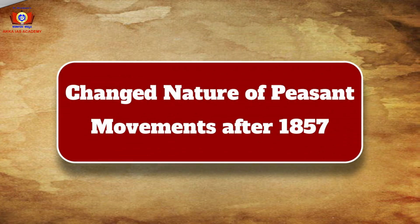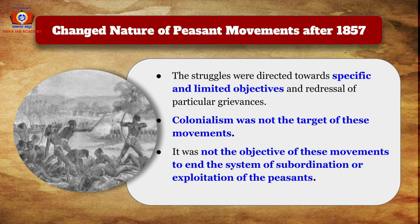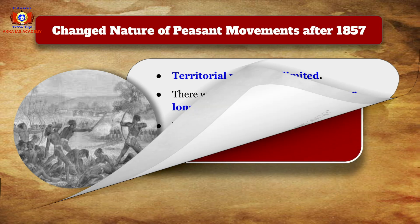The nature of revolts changed after 1857. Peasants emerged as the main force of agrarian movements, fighting directly for their own demands, centered almost wholly on economic issues. These movements were directed against immediate enemies — foreign planters, indigenous zamindars, and moneylenders — with specific and limited objectives. Colonialism was not the target; ending the system of exploitation was not the goal. The territorial reach was limited, with no continuity or long-term organization, though peasants developed strong awareness of their legal rights.